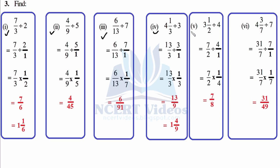Now 4 and 3/7: that is 4 times 7 plus 3 is 31 over 7, divided by 7 over 1. Placing 1 in the denominator is understood. So 31/7 — changing sign and flipping 7 over 1 to 1 over 7 — gives 31 over 49. It is proper as the numerator is smaller than the denominator. That was question number three.